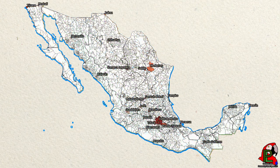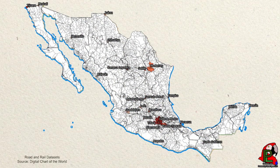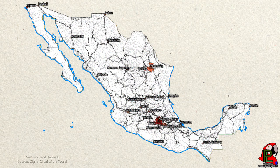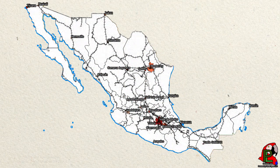Mexico's infrastructure stretches throughout the country, as seen in this road dataset, making up 366,000 kilometers of road. In this railroad dataset, we see Mexico has over 14,000 kilometers in its railroad network, connecting the nation together.